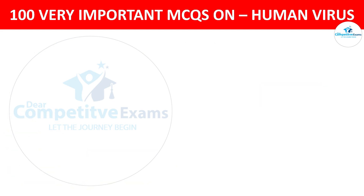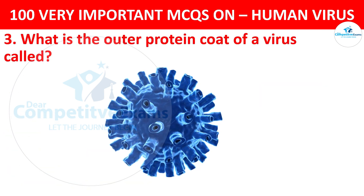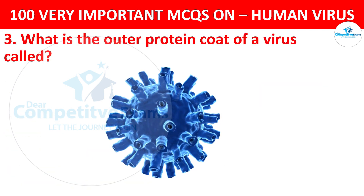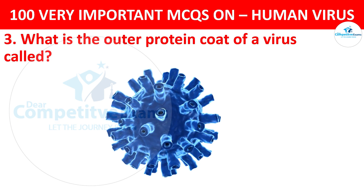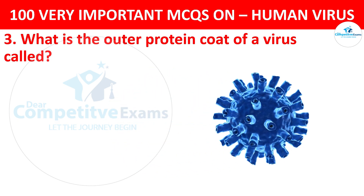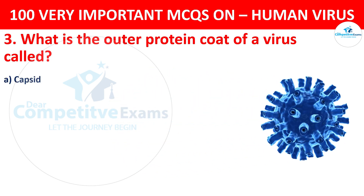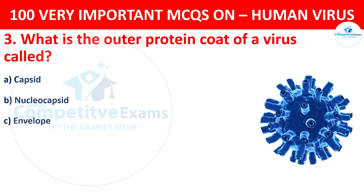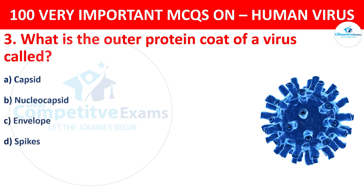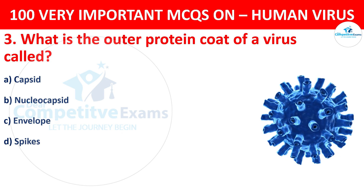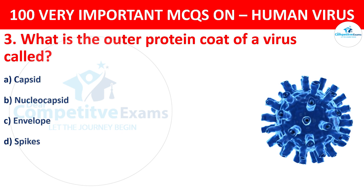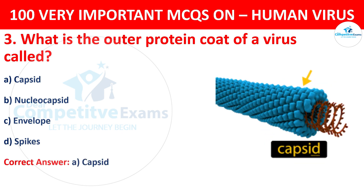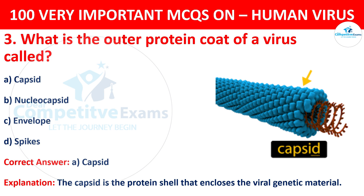Question 3. What is the outer protein coat of a virus called? Your options are capsid, nucleocapsid, envelope, or spikes. The correct answer is A, that is capsid. Capsid is the protein shell that encloses the viral genetic material.